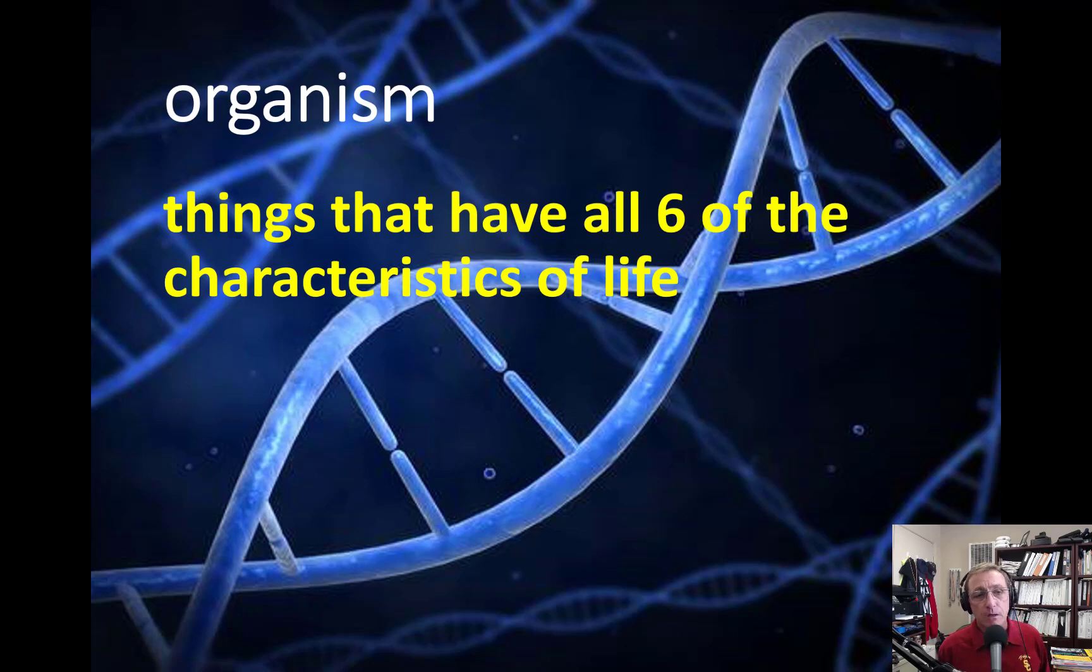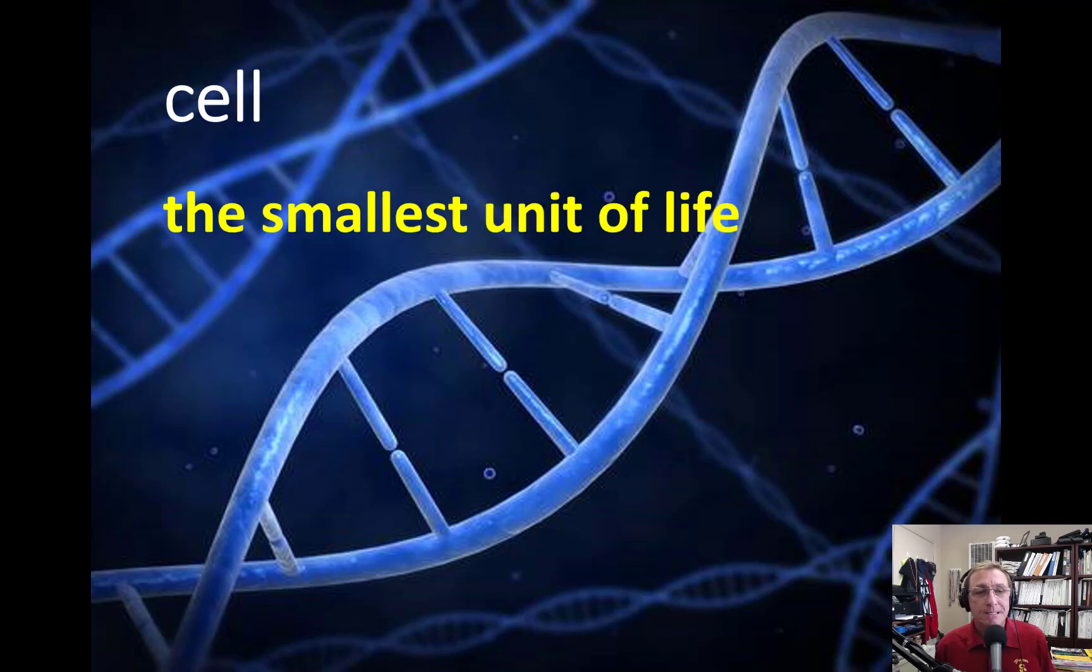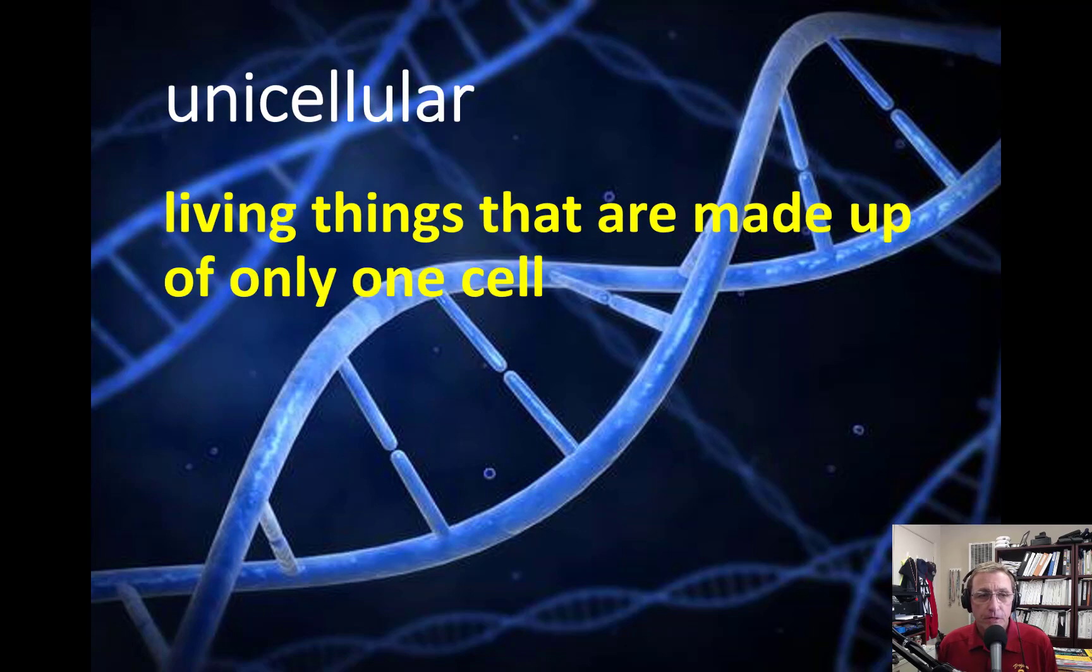Okay, so an organism. These are things that have all six characteristics of life. You should probably be really familiar with that by now. A cell is the smallest unit of life at this time that we've identified. So a cell is the smallest unit of life.